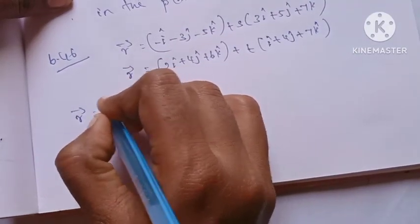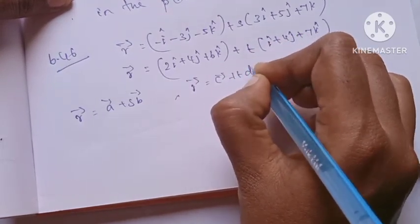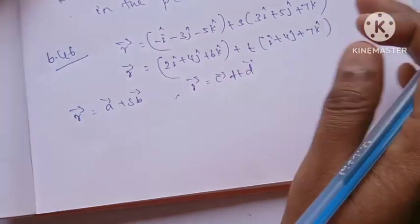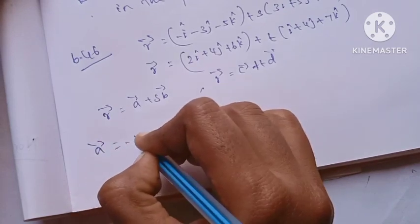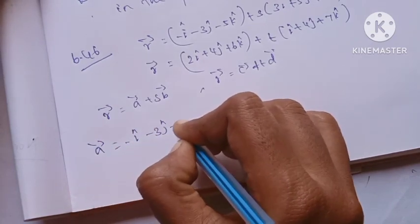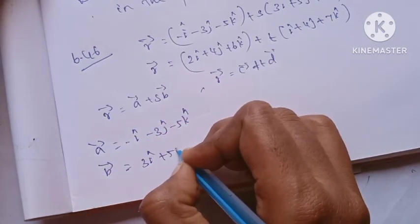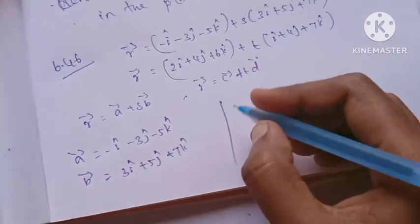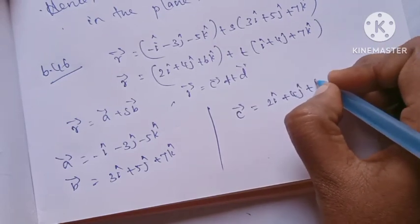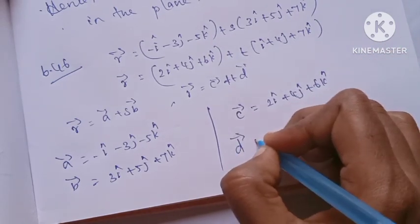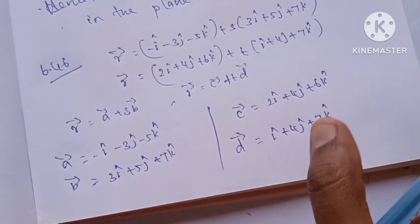How can you get the vector? In this example, B vector is the concept. R vector equals C vector plus T times D vector. A vector is i minus 3j minus 5k. B vector is 5j plus 7k. C vector is 2i plus 4j plus 6k. D vector is i plus 4j plus 7k.